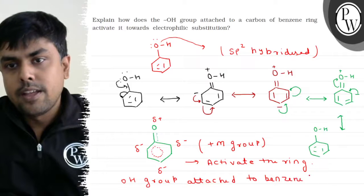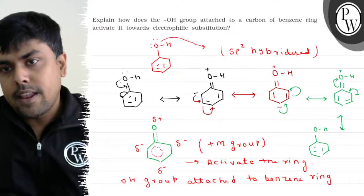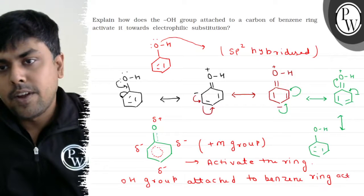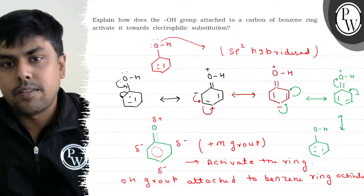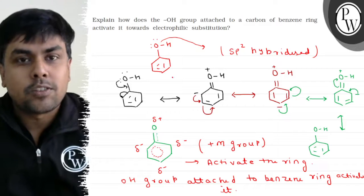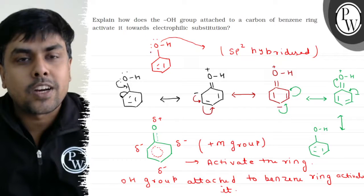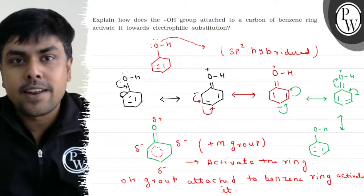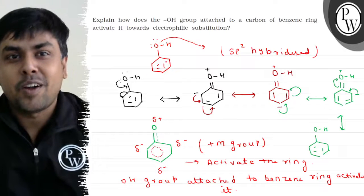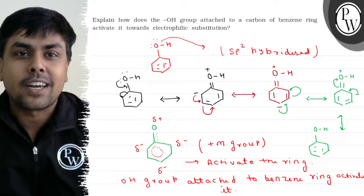It activates the ring. How does it do it? Because oxygen had a lone pair, the movement of electrons occurred towards the ring. Electrons went into the ring, so the ring became electron rich. And now it is electron rich, so it is activated.